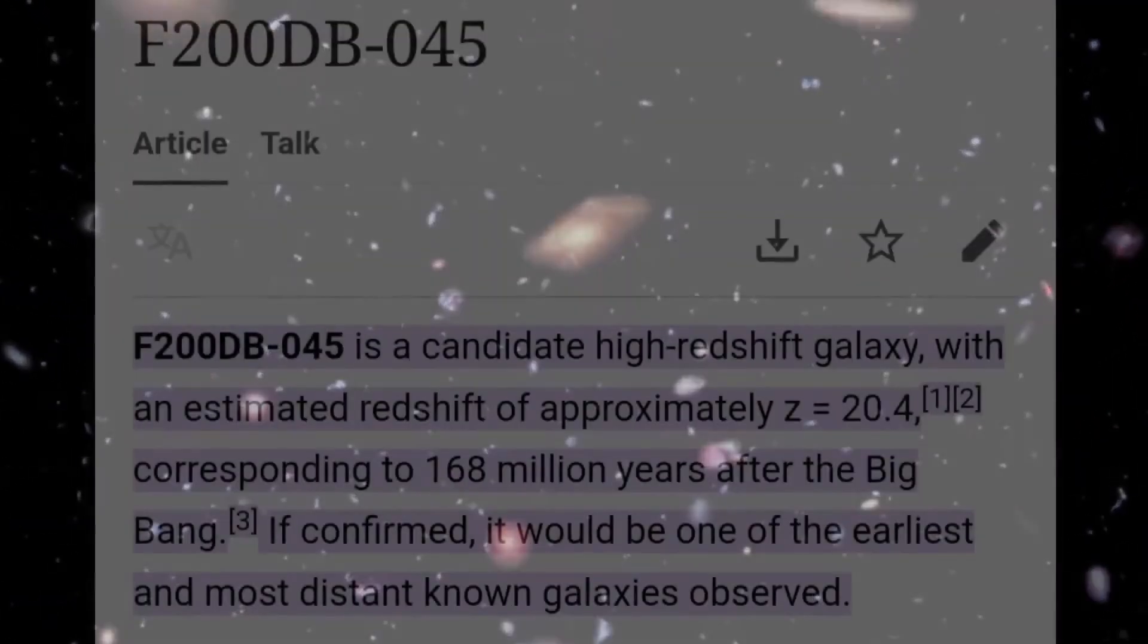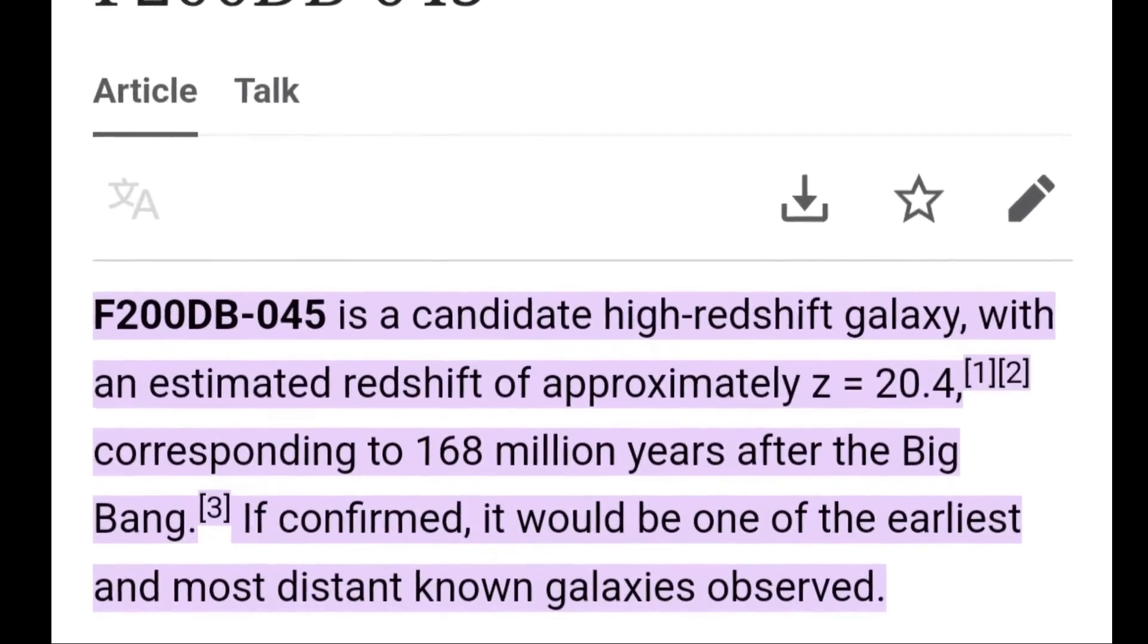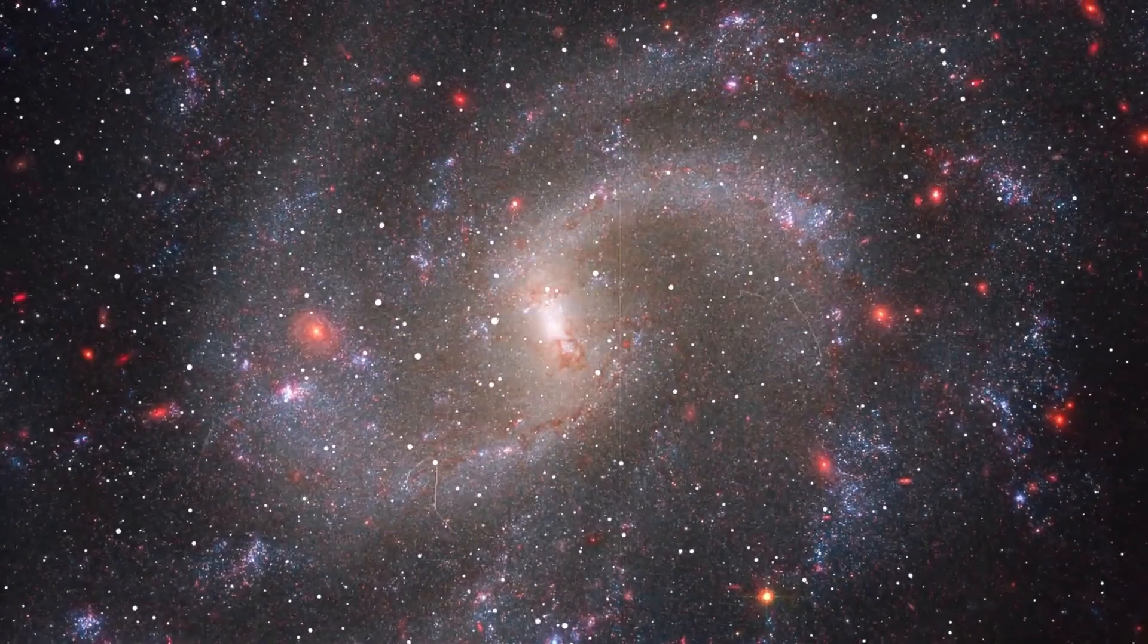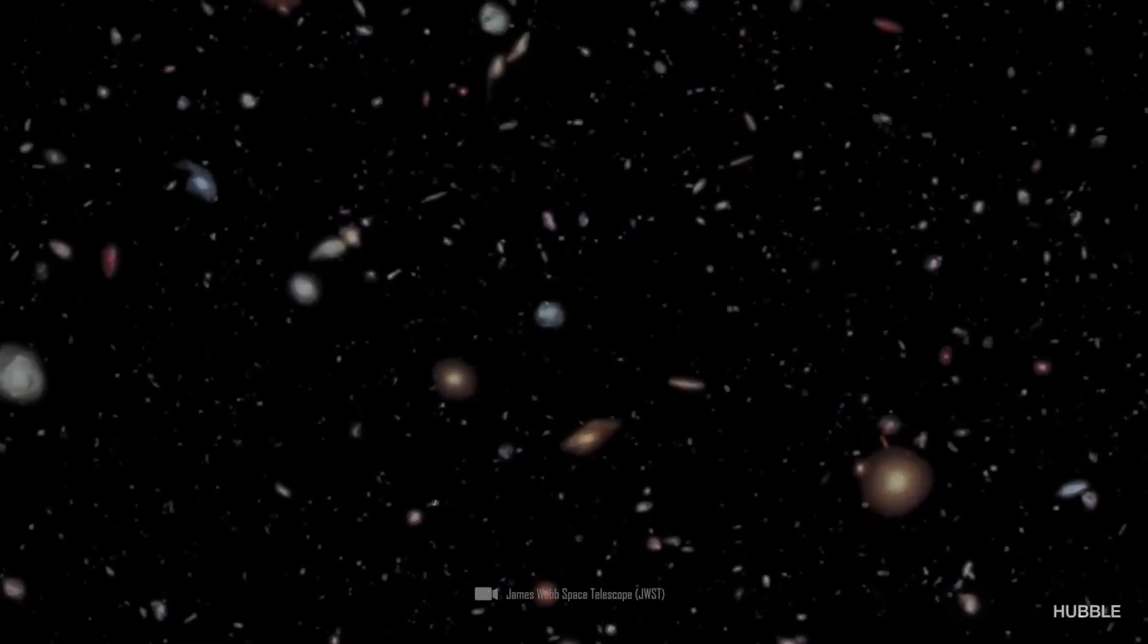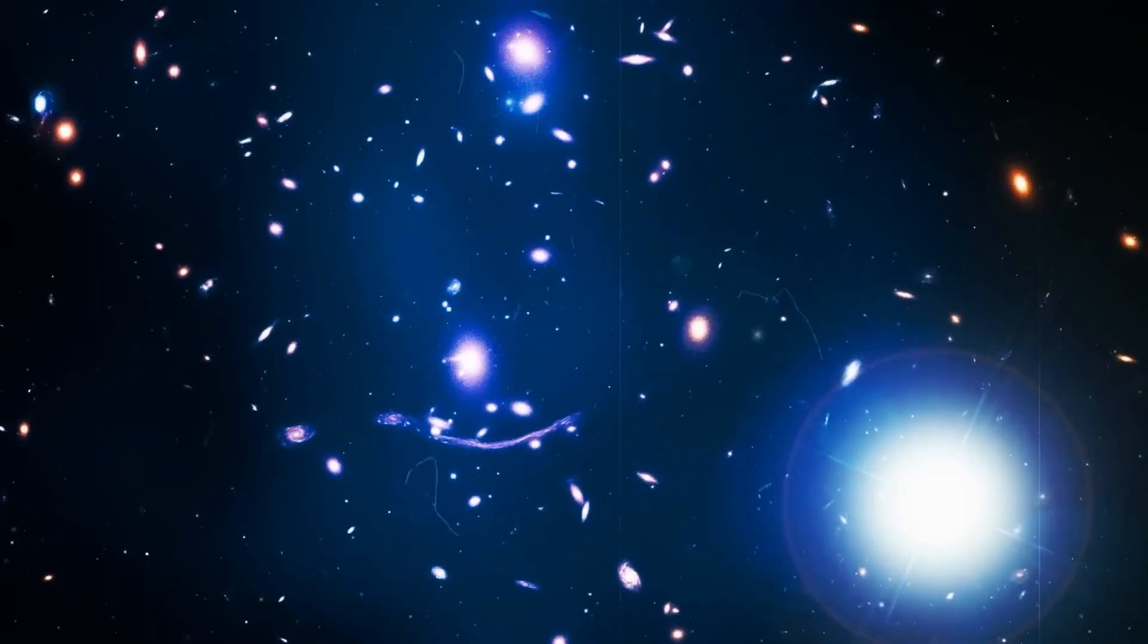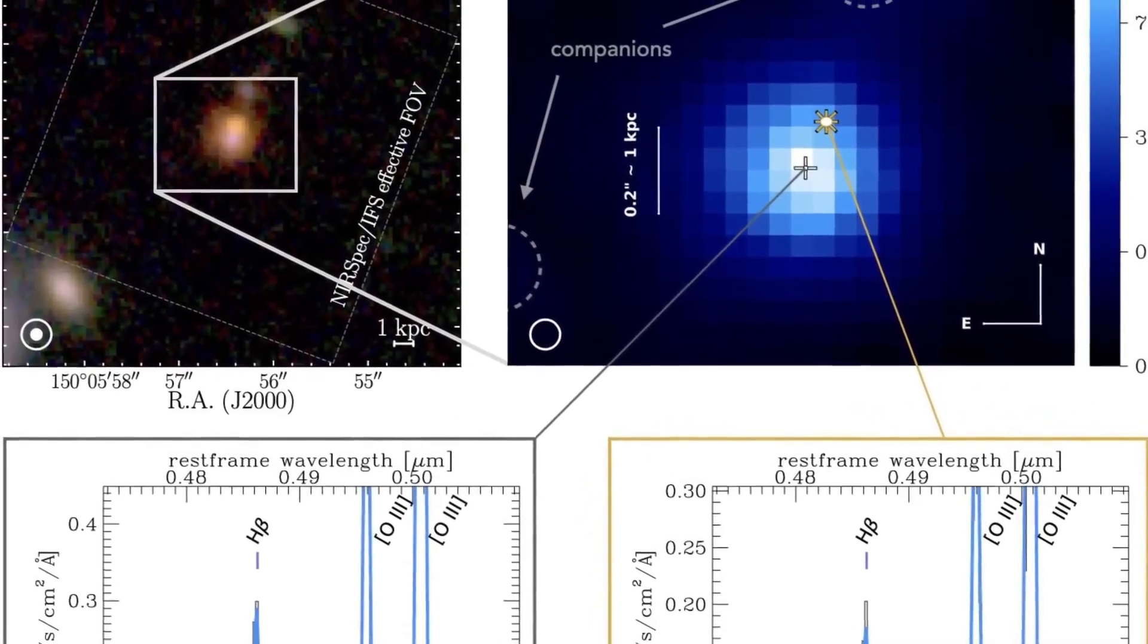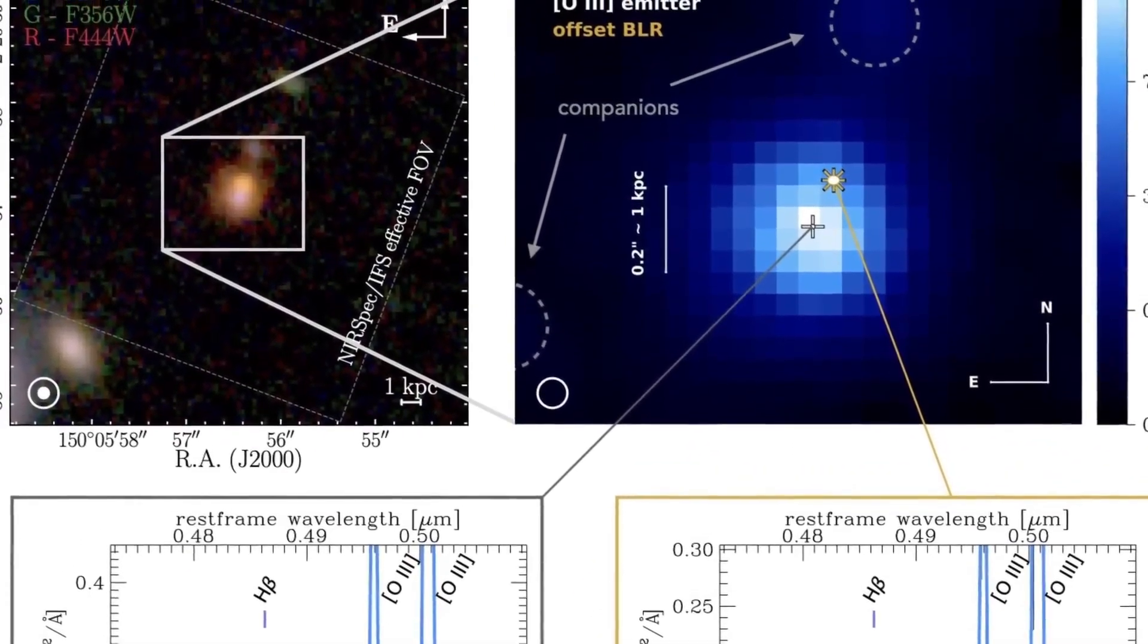Not only this, what scientists found in the deep early universe could break the entire foundation of the standard cosmological model. Astronomers say that we did not expect to see something like this in the Webb image, that the universe is actually very old, but not infinitely old, so that was a big surprise too.